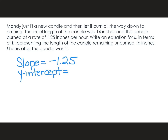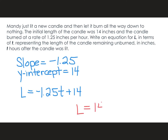Now the y-intercept — where did the candle start? The initial length is 14. So: L equals negative 1.25T plus 14. And again, you might have written it the other way. I kind of like it this way: L equals 14, the height of the candle, minus 1.25 inches per hour.